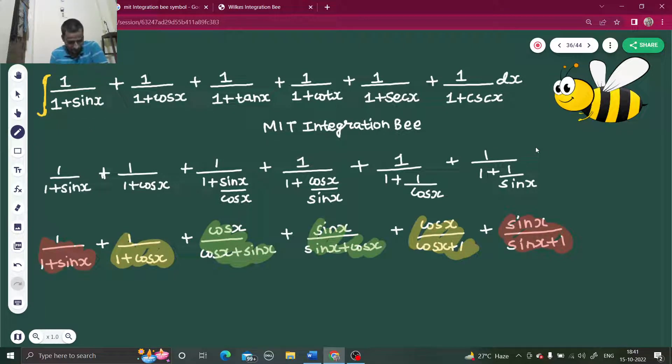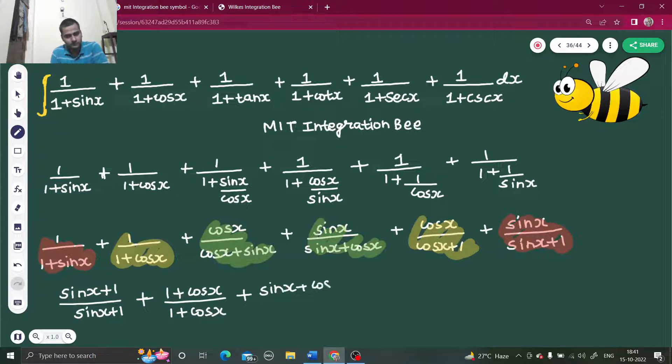At the end, you get the red ones. If clubbed, you will get sin x plus 1 divided by sin x plus 1. If I club the yellow ones, I will get 1 plus cos x divided by 1 plus cos x. Coming to the green ones, I will get sin x plus cos x divided by sin x plus cos x.